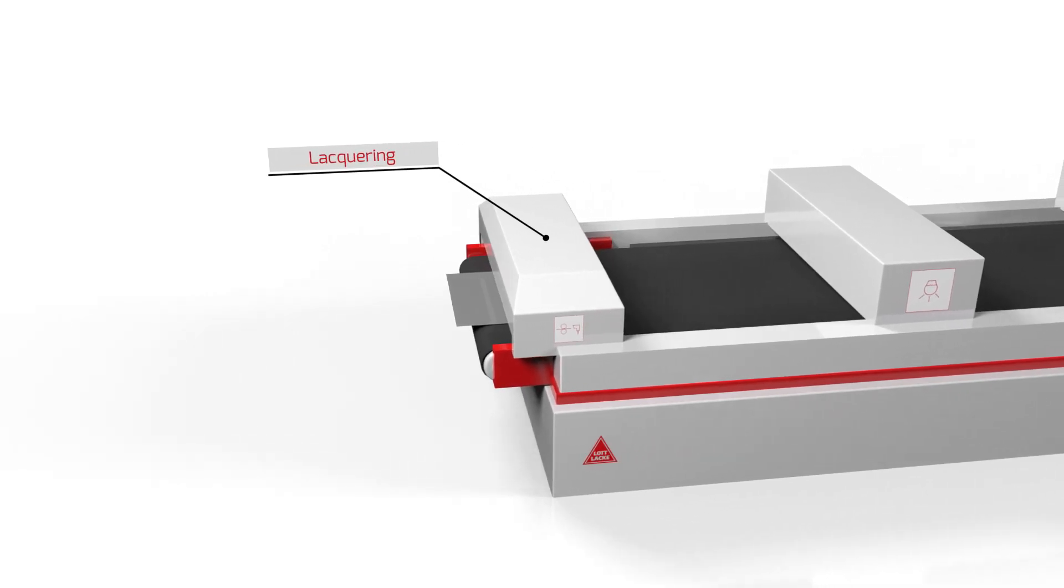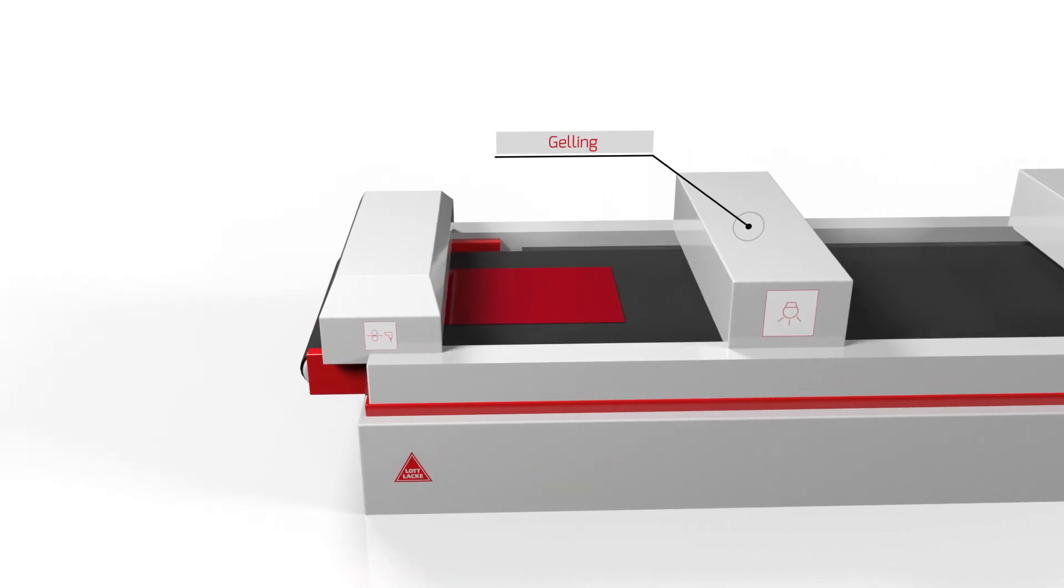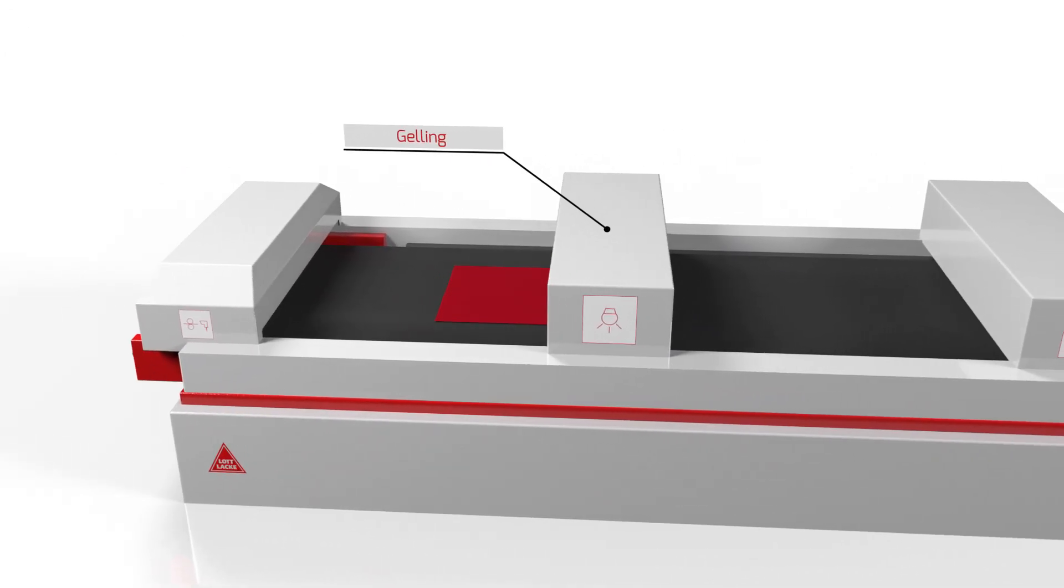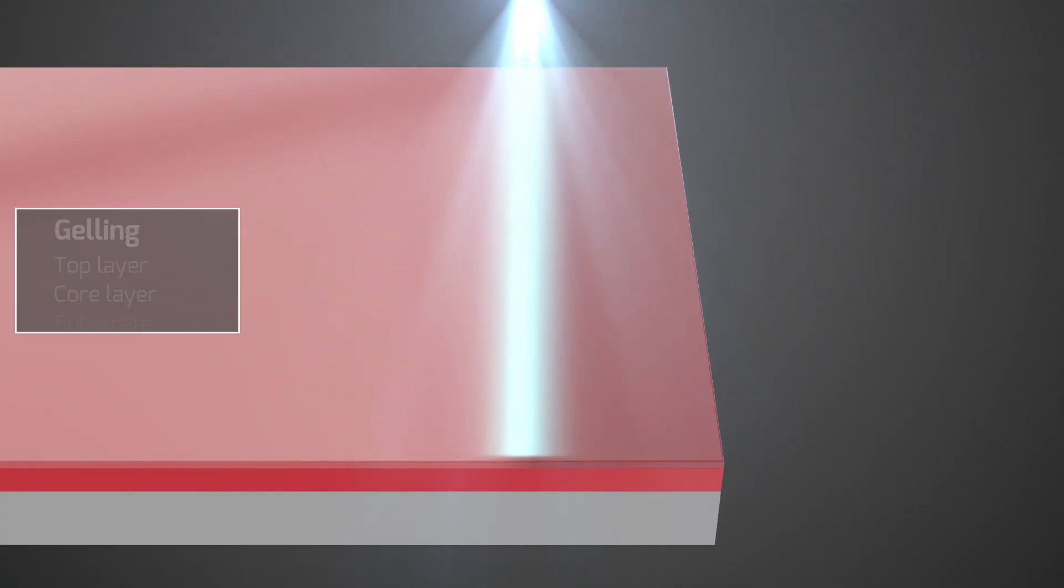At the beginning of the process a special lacquer formulation is applied to the substrate by roller or curtain coating. In many applications the lacquer is pre-gelled using radiation technology in a second step.